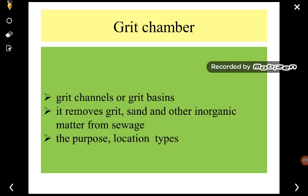The next unit under primary wastewater treatment is the grit chamber, also known as grit channels or grit basin. Its main function is to remove grit, sand, and other inorganic matter from the sewage. Inorganic particles, grits, and sand are removed by means of the grit chamber. The main purpose, location, and design vary from plant to plant.